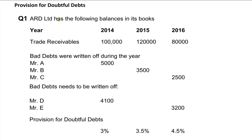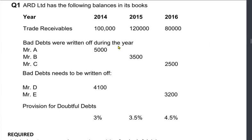It's my own question — ARD Limited. ARD Limited has the following balances in its books. As you can see there are three columns: one for 2014, one for 2015, and one for 2016. Trade receivables are the customers to whom we have sold goods on credit. Bad debts were written off during the year, and bad debts need to be written off. If you haven't gone through the lesson on irrecoverable debt, I would highly suggest you close this and go to that previous topic first.